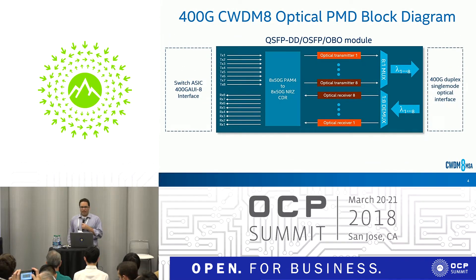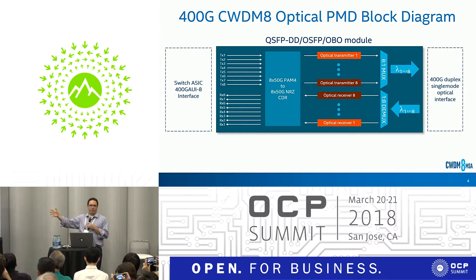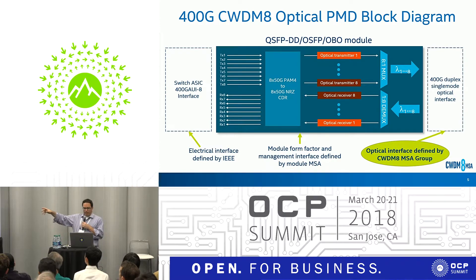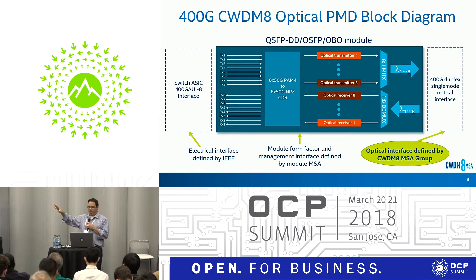Looking at what the module looks like — in any optical module, you have an electrical interface on one side and an optical interface on the other side. In the case of CWM8, you have an electrical interface that's an IEEE standard 8 by 50 gig PAM4 interface defined by the IEEE. On the optical side, you have an interface that the CWM8 MSA defines, which is 8 by 50 gig NRZ.